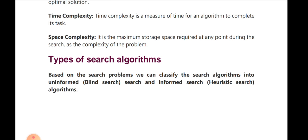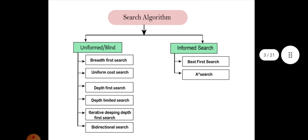Here are the types of search algorithms. We classify search algorithms into uninformed search, also called blind search, and informed search, also called heuristic search. If you use the exam, you can use heuristic search. Uninformed is blind search; informed is heuristic search.